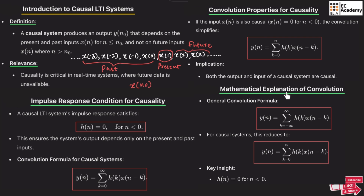Now let us understand the mathematical explanation of convolution. The general convolution formula has k varying from minus infinity to infinity. For a causal system with causal input, it reduces to the formula where the summation varies from 0 to n. The output of a causal system depends upon the past and present values of the input and not upon the future value of input.